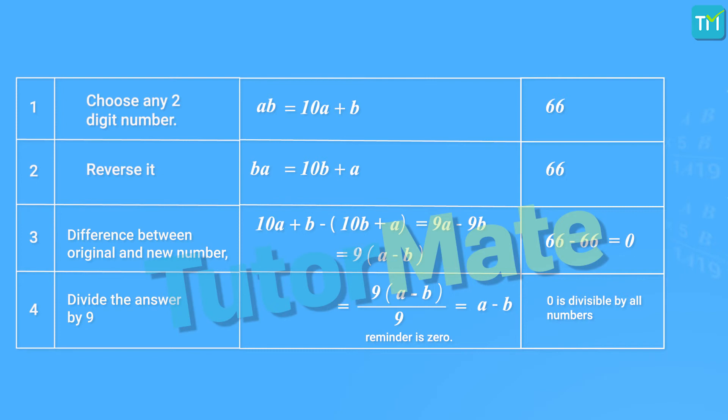We can conclude that the difference between a number and the number formed by reversing its digits is divisible by 9. But that's not where the trick ends. Let's take this one more step further. So, when we divide the difference by the number 9, we get the remainder as 0. But what about the quotient? Can we guess that as well?